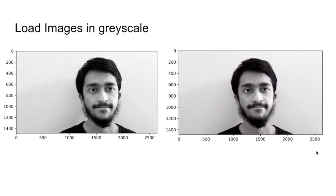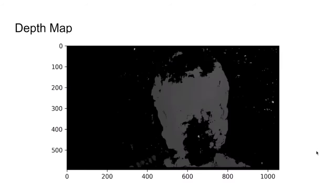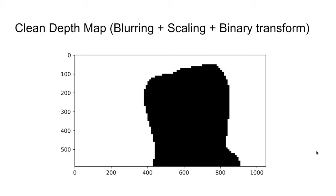First we load the two images in grayscale, then we scale it down to 40% and add Gaussian blur to it. Then we create a depth map from those two images. Once that's done, we clean the depth map using further Gaussian blur, scaling, and binary transform.